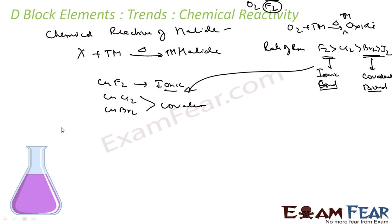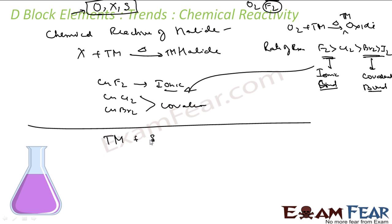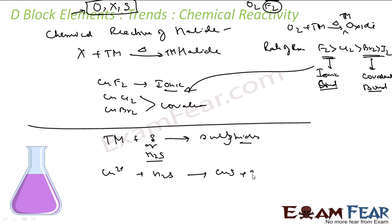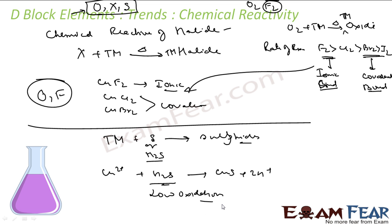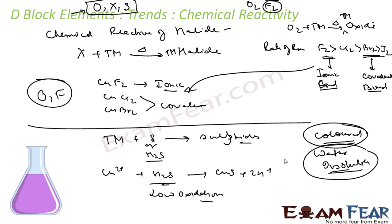Transition metals also react with sulfur to form sulfides. You can use elemental sulfur or H2S. For example, copper ions react with H2S to give copper sulfide and H+ ions. In sulfides, transition metals typically show low oxidation states — high oxidation states occur only with oxygen and fluorine. Sulfides are typically colored, as are most transition metal ions, and transition metal sulfides are water insoluble.